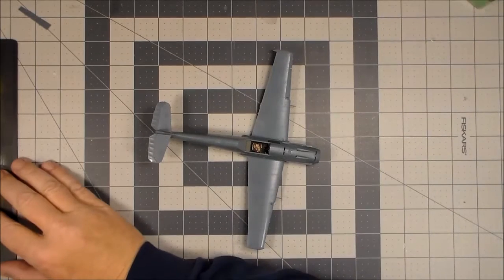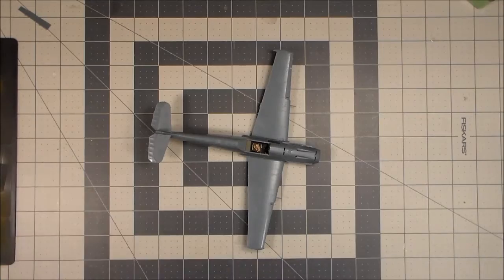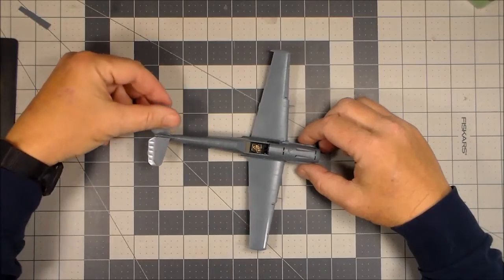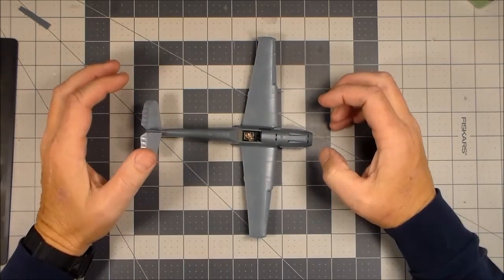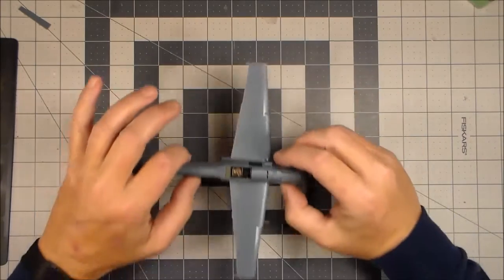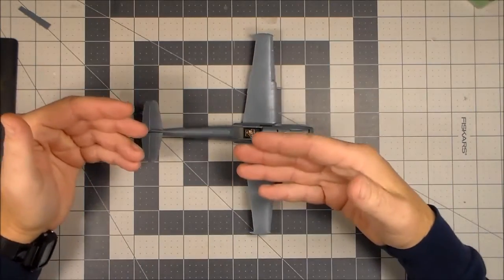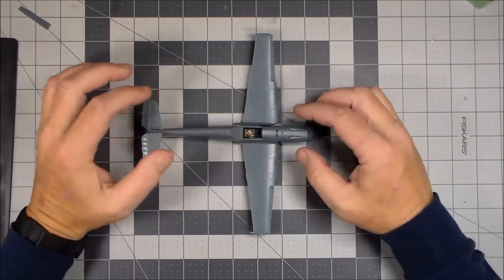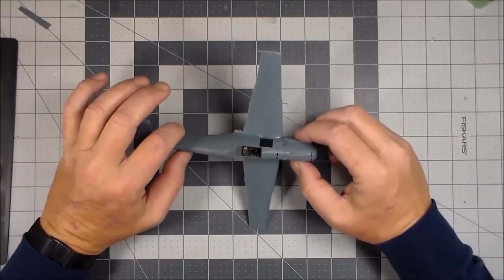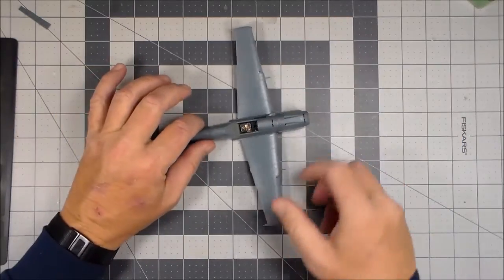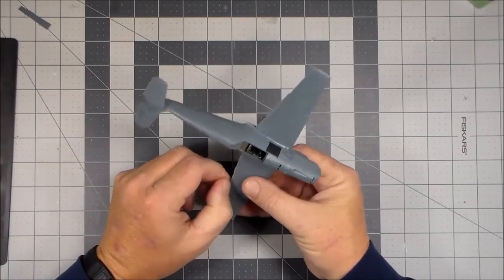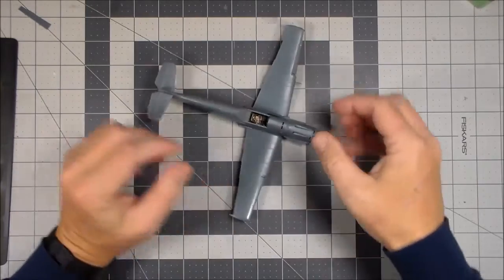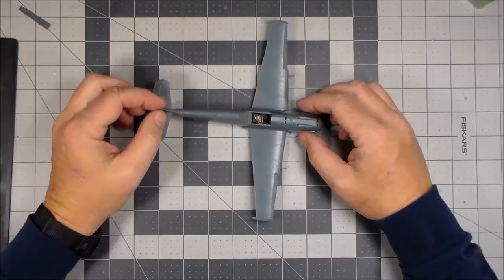Welcome back to another episode of Plastic Models by a Regular Dude. Since I got a request from one of my viewers, I figured I would do a quick explanation of how I glue fuselage halves together. It's a really basic thing. I'm not saying what I do is the best way to do it, it's the way I do it and it works for me. Max, this is for you mainly.